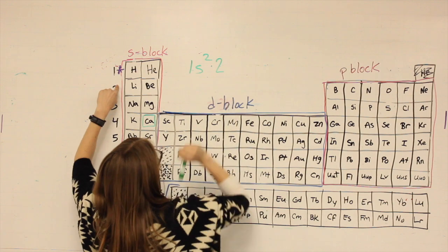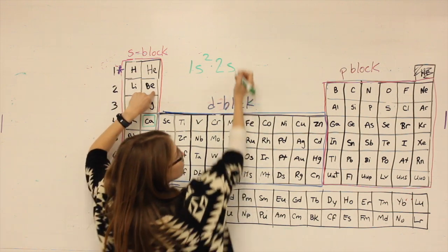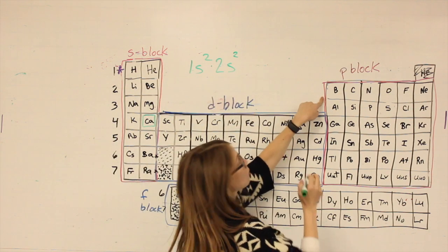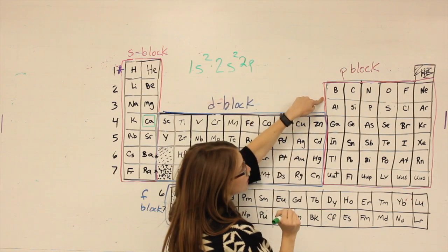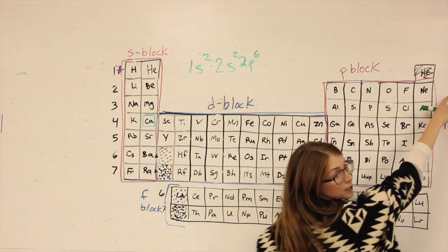What row? Two. What letter? S. How many spaces? One, two. That got me through neon. I'm not yet at calcium.